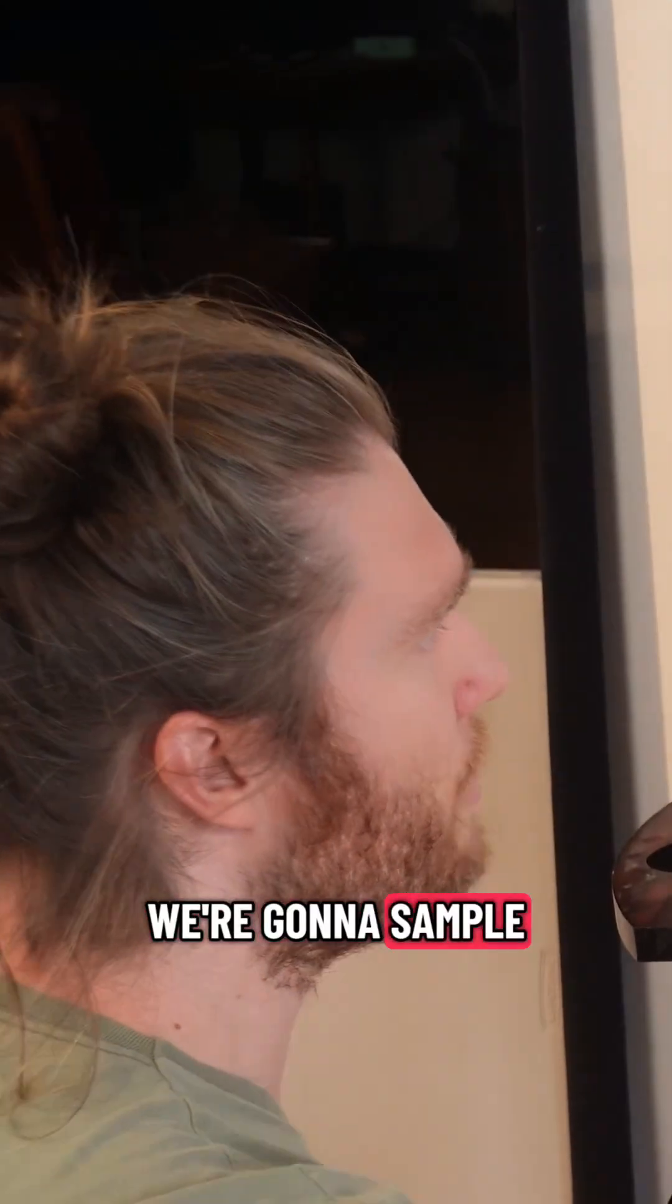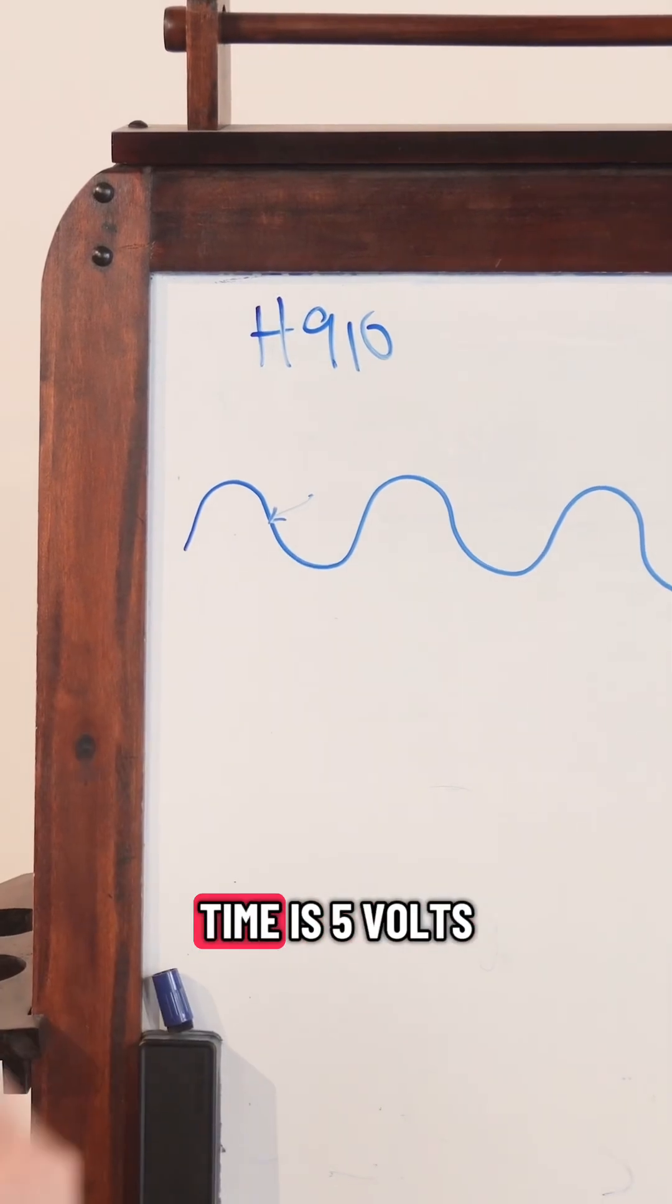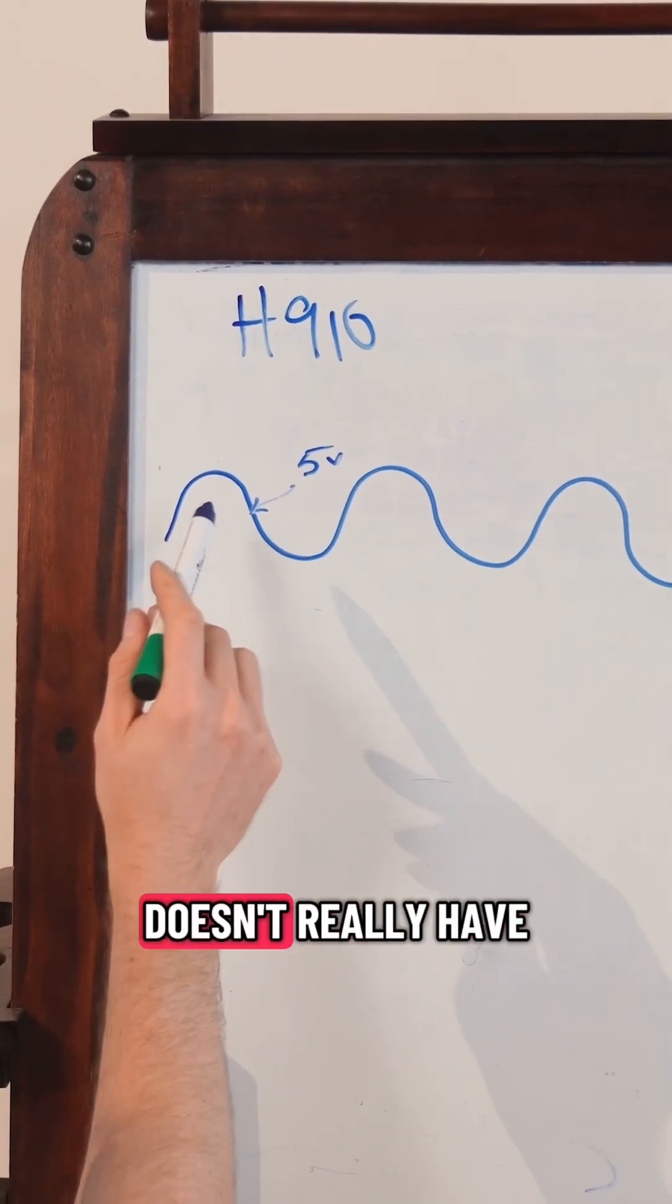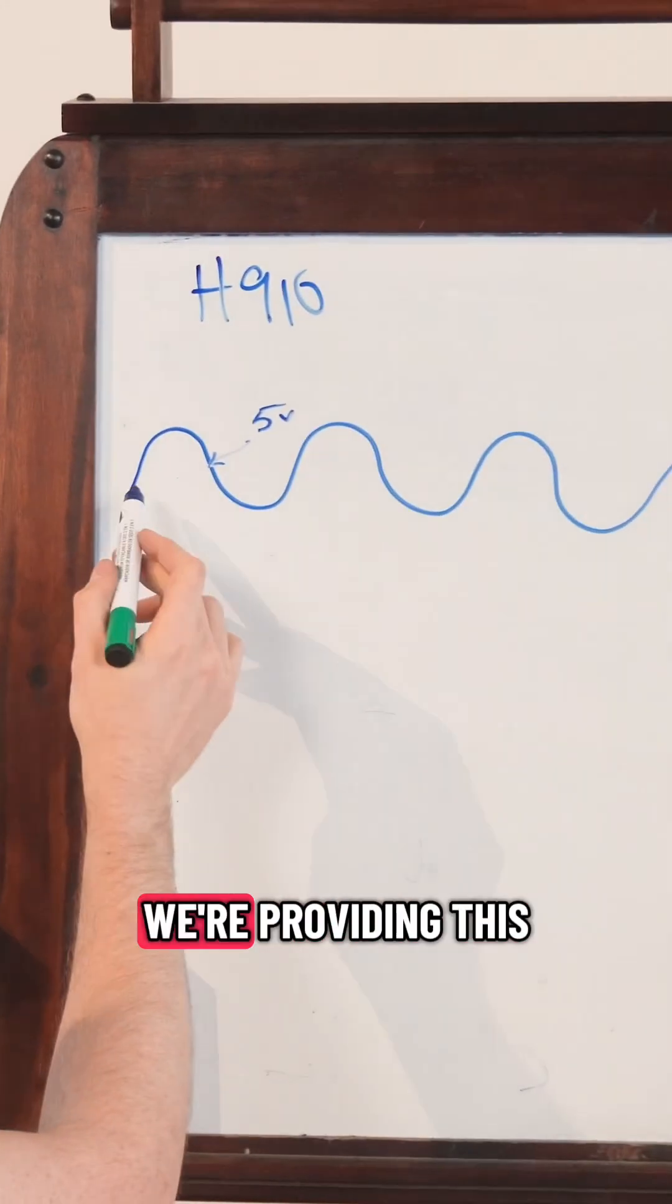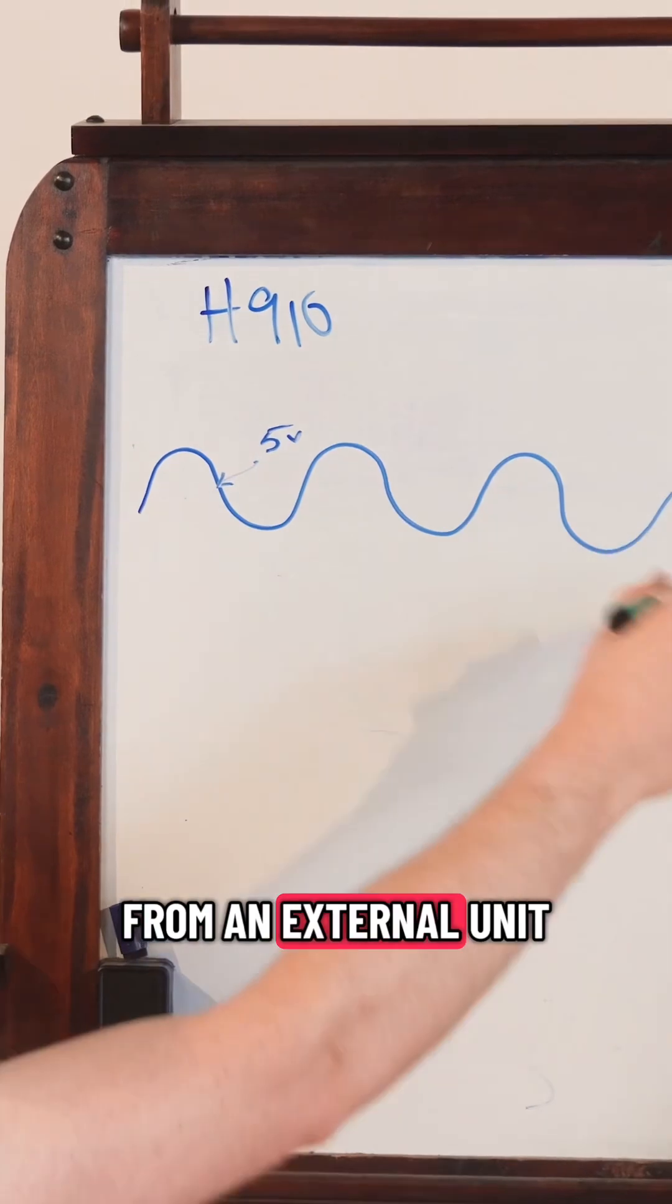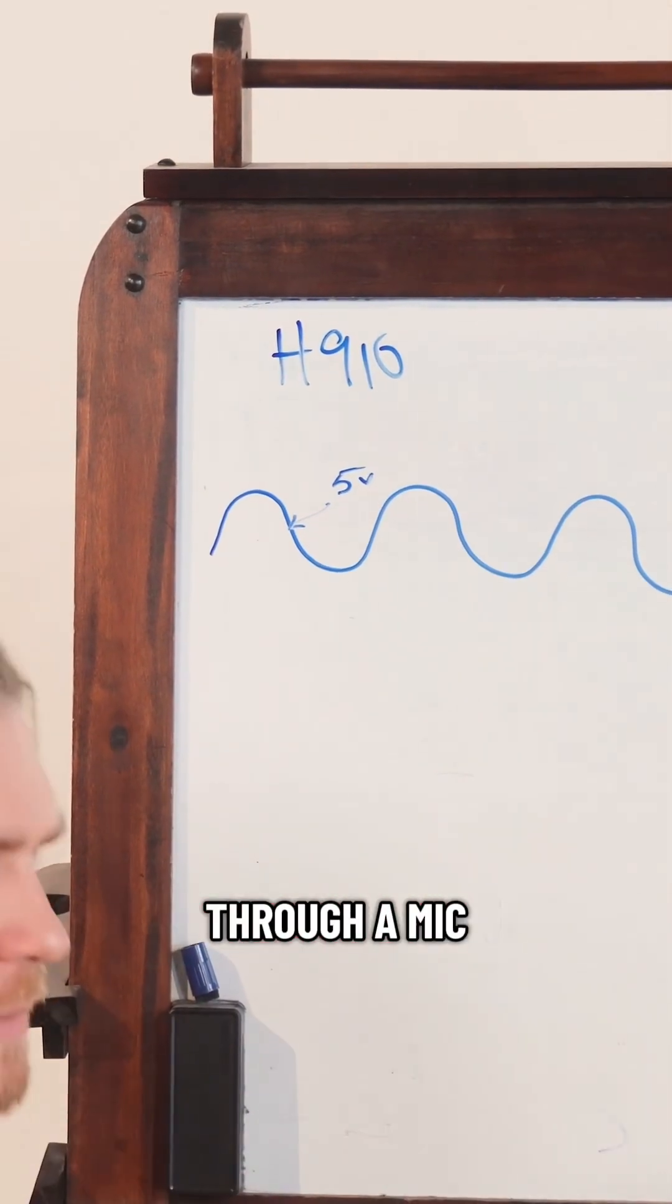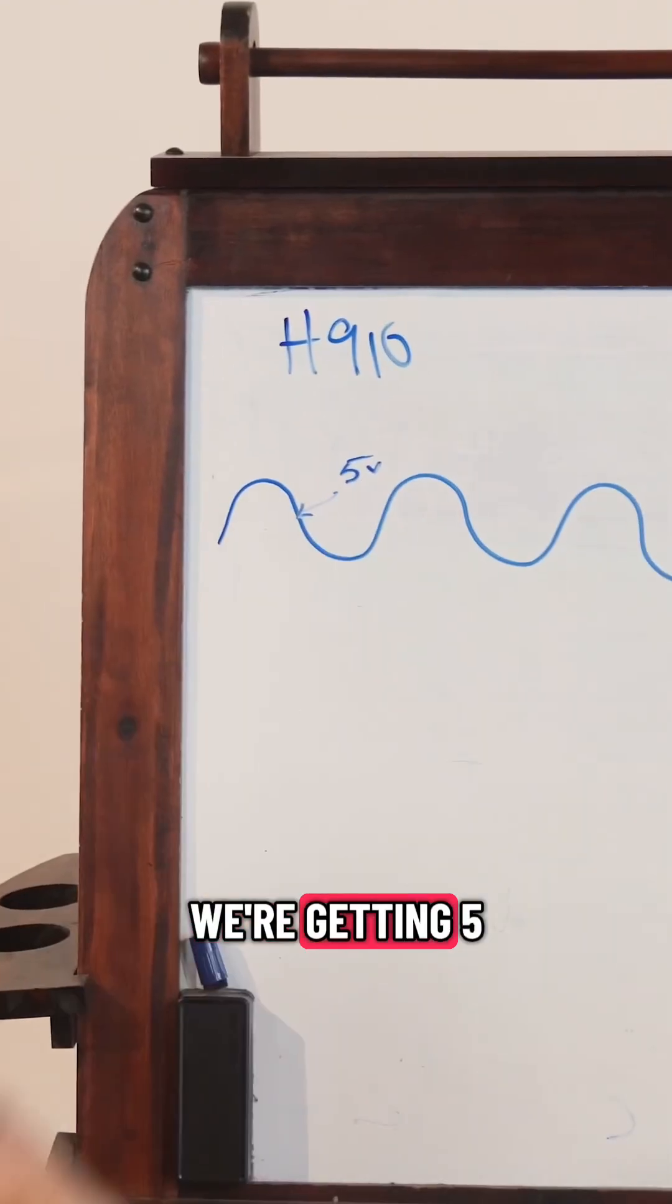We're going to sample this voltage at this point in time. It's five volts. This voltage doesn't really have much to do with the H910 because we're providing this from an external unit, like a synthesizer or a microphone through a mic preamp or whatever. But at this point in time, we're getting five volts.